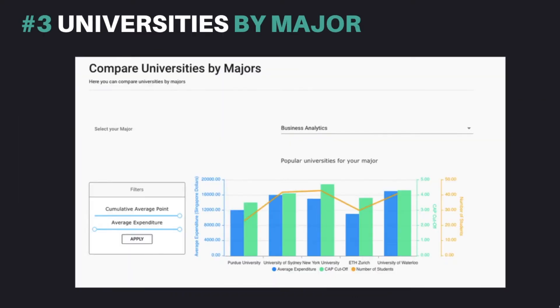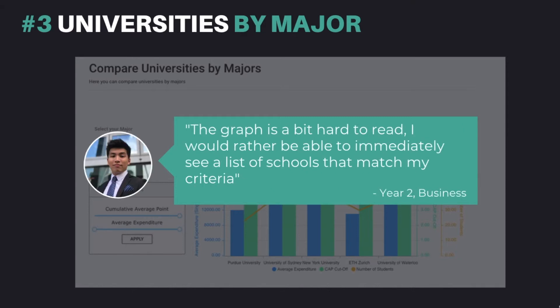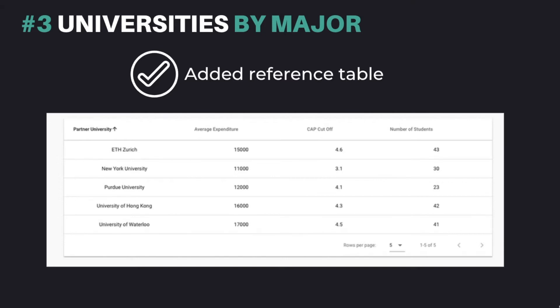Our third place feature is universities by major. Users' feedback indicated that this feature addressed their problem of wasting time looking through a long list of partner universities and applying for unsuitable universities. Since CAP, budget and suitability to their major were their main considerations when choosing a university for exchange, we created filters that allowed users to filter out universities that did not fit their requirements. However, users disliked that the information was presented in a graph as it was counter-intuitive. Thus, we added a table of all universities for students of their major for easier reference.